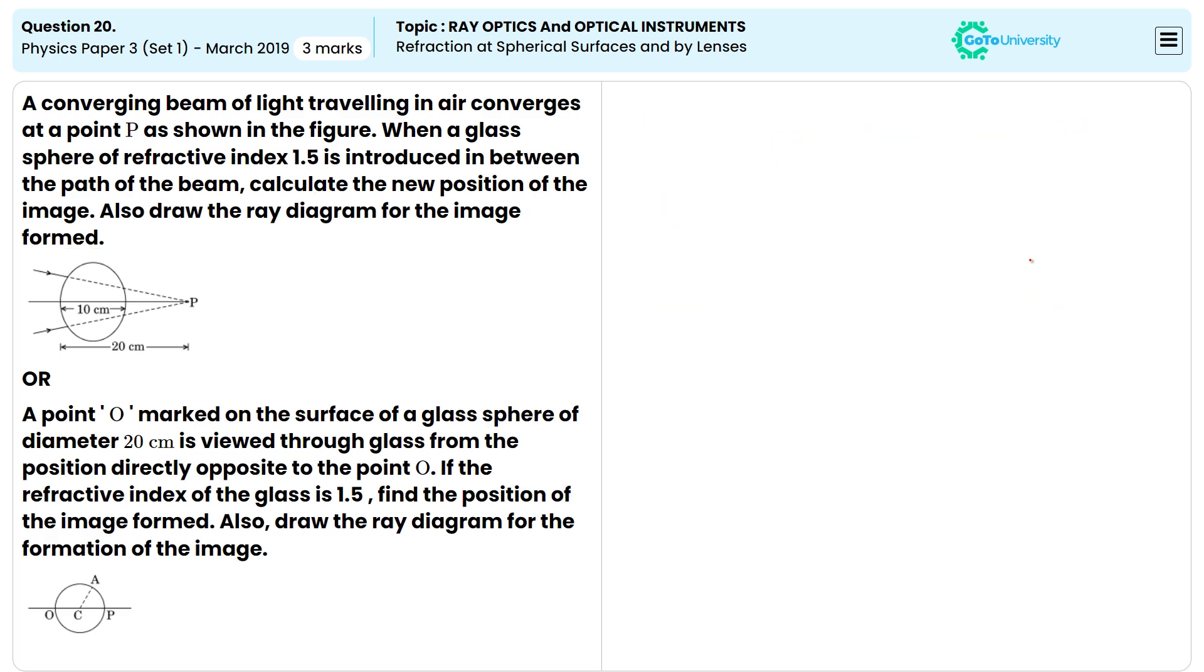Point O marked on the surface of a glass sphere of diameter 20 centimeters is viewed through glass from the position directly opposite to point O. If the refractive index of the glass is 1.5, find the position of the image formed. Also, draw the ray diagram for the formation of the image.